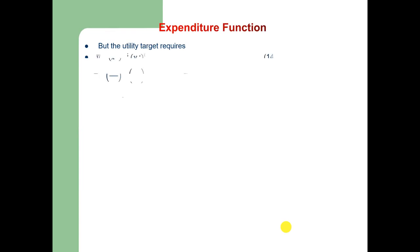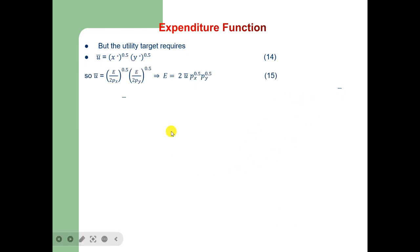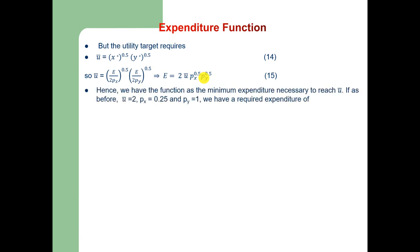The utility target requires u-bar = x*^0.5 * y*^0.5. Substituting x* = e/(2p_x) and y* = e/(2p_y), we get u-bar = (e/(2p_x))^0.5 * (e/(2p_y))^0.5. This implies the expenditure function: e = 2 * u-bar * p_x^0.5 * p_y^0.5, which is the minimum expenditure necessary to reach the utility target u-bar.